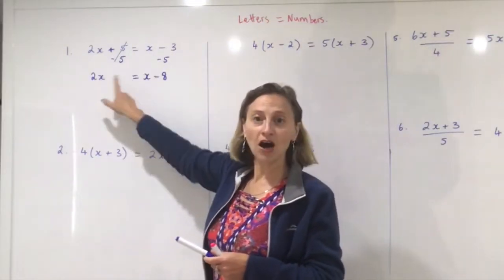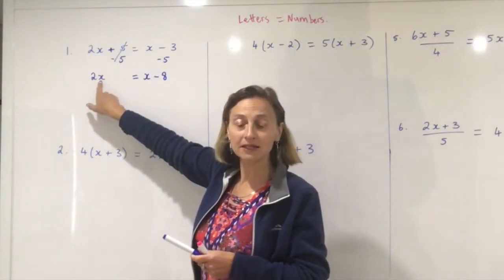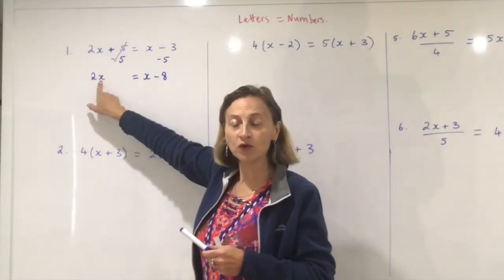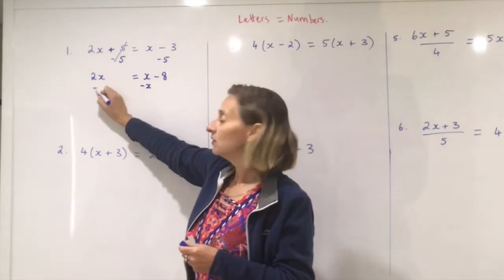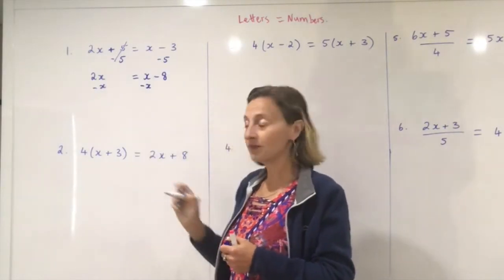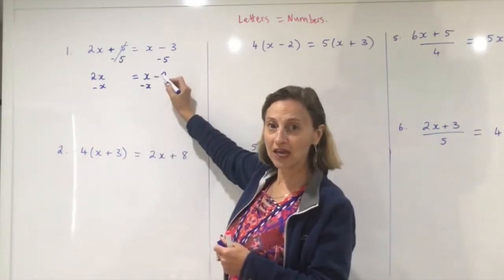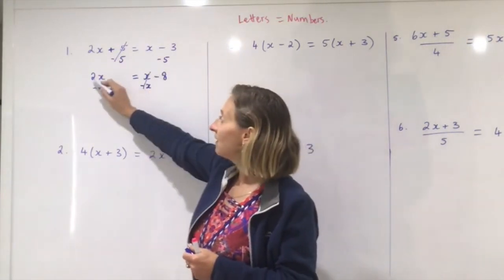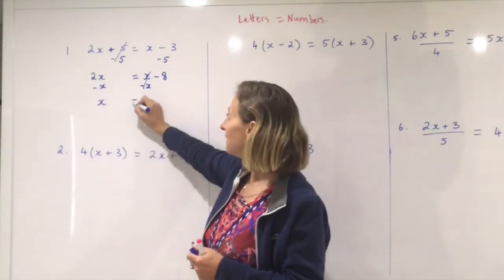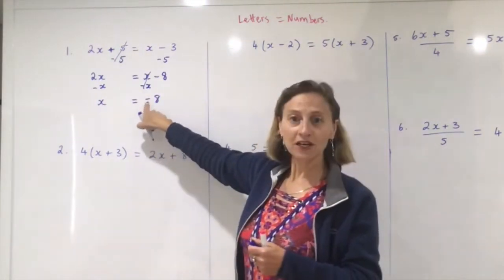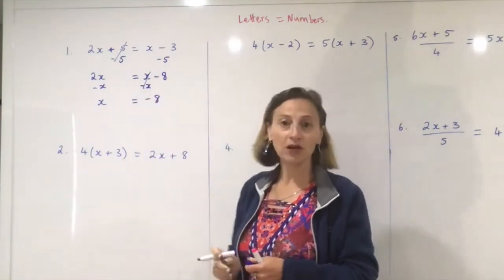I now need to move either my x to the other side or get rid of the two times x. But remember, rule number four says always divide last. So I'm going to move the x from over here to the other side. To get rid of the plus x I need to minus x, so those two cancel. Two x minus x is x, equals minus eight. Don't forget to put the minus eight — if you forget the minus then you'll get it wrong.